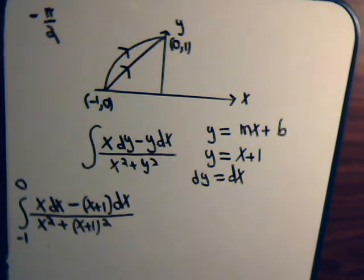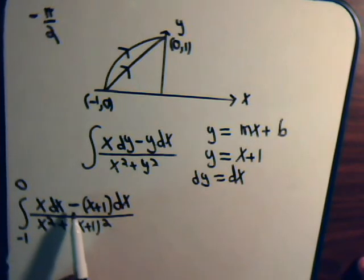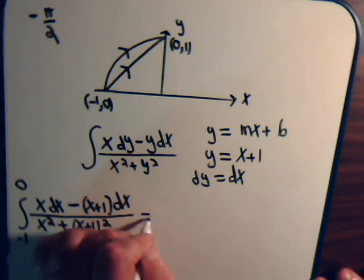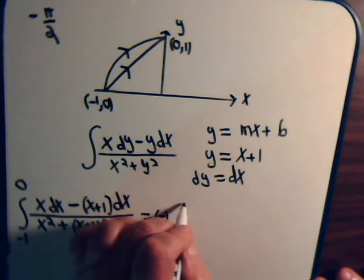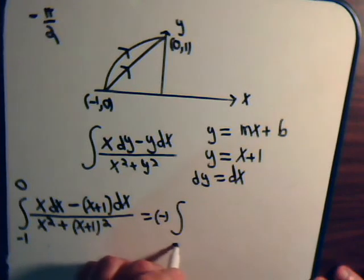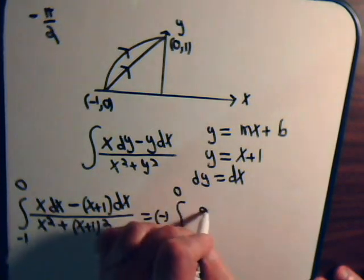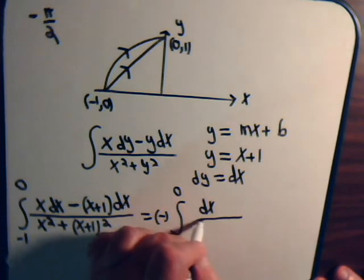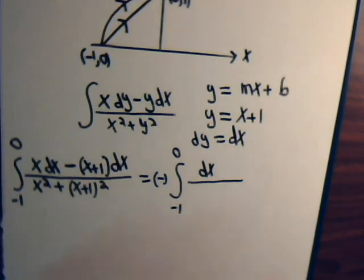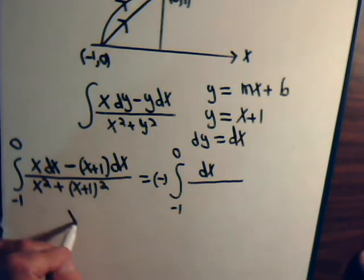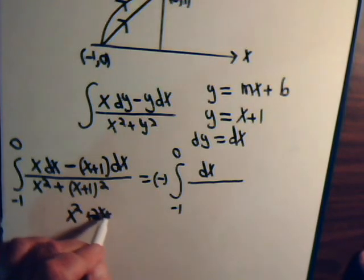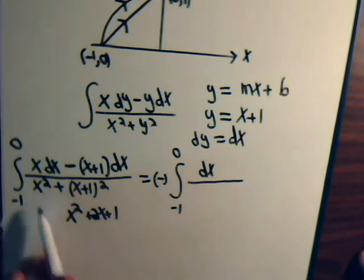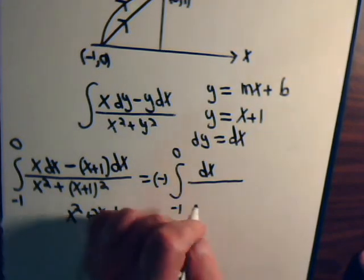Looking at the numerator, we have x dx and then minus x dx, so those cancel, leaving just minus dx. Expanding the denominator: (x plus 1)² gives x² plus 2x plus 1, and adding x² gives 2x² plus 2x plus 1. So we have minus the integral from minus 1 to 0 of dx over 2x² plus 2x plus 1.